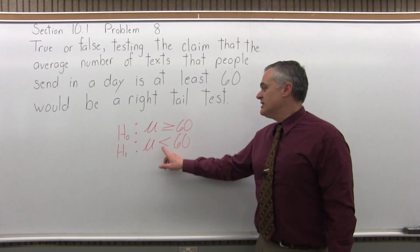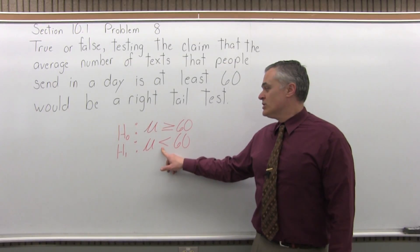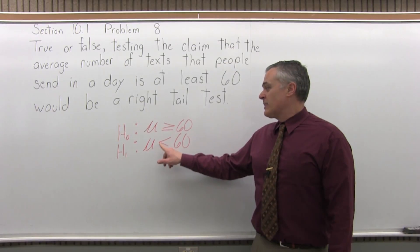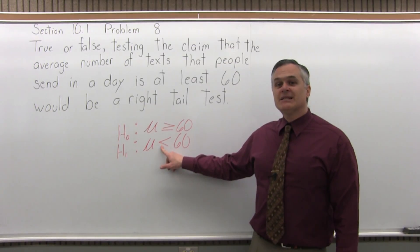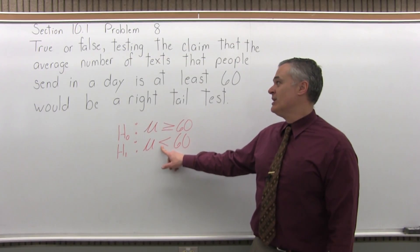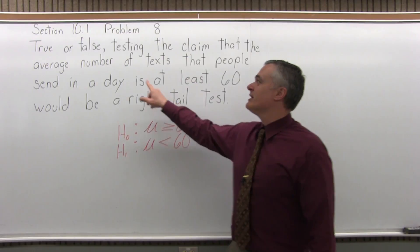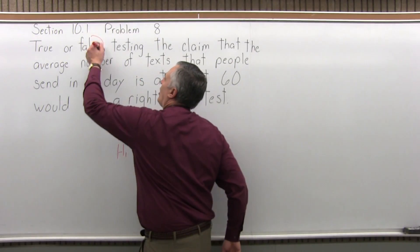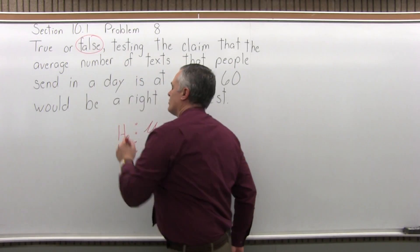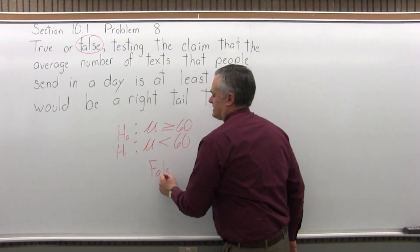It's the inequality symbol in the alternate hypothesis that determines what type of test you have. The alternate hypothesis has a less than symbol — less than points to the left — which means this is a left-tailed test. So saying it's a right-tailed test would be false.